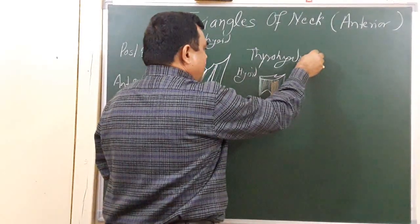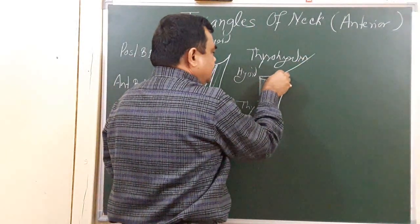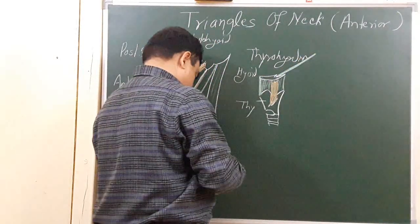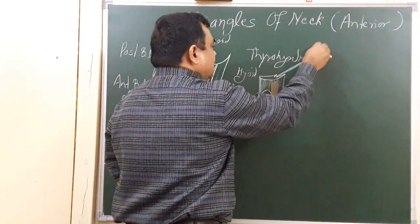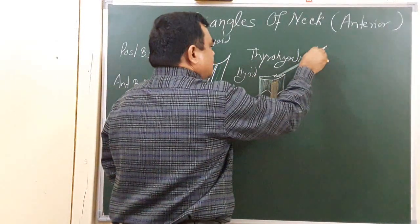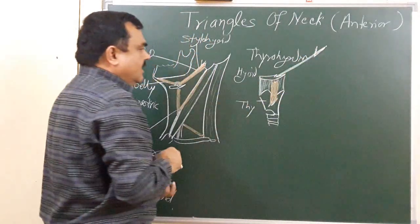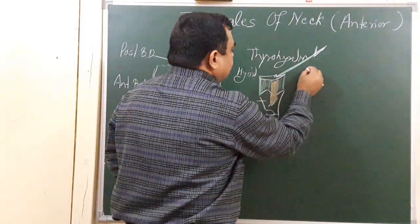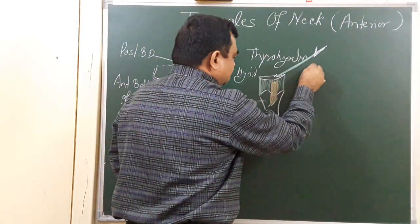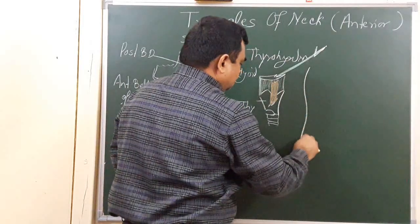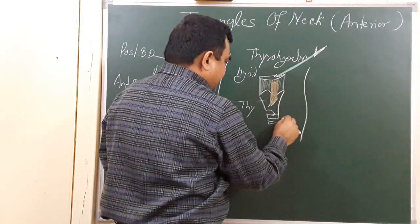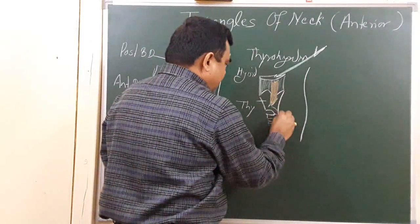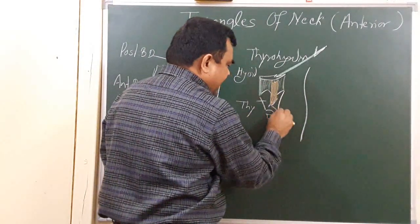This is the stylohyoid muscle, and here is the stylohyoid ligament. Here is the position of the inferior constrictor of the pharynx — this is the inferior constrictor of the pharynx.